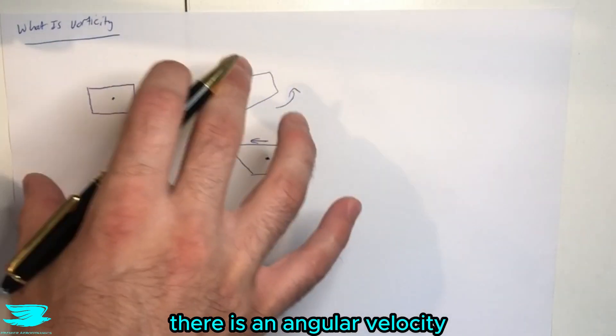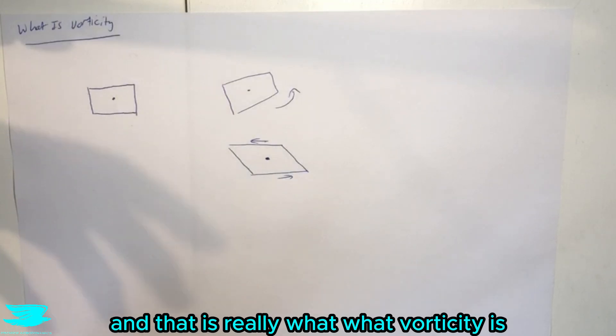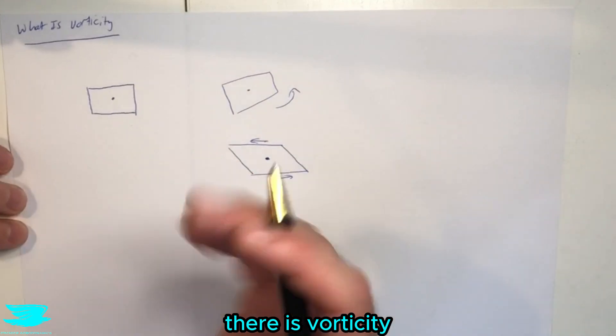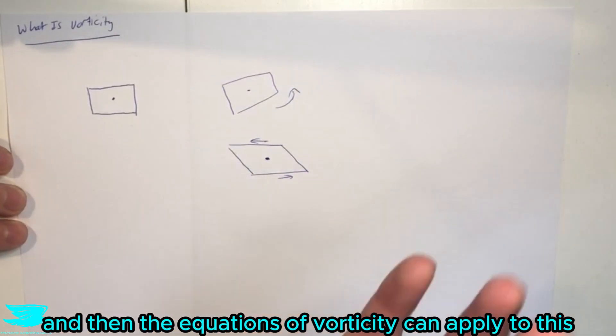And in this particular case the flow can be called rotational because this has rotated. As such there is an angular velocity and that is really what vorticity is, it's just angular velocity. So with this there is vorticity and then the equations of vorticity can apply to this.